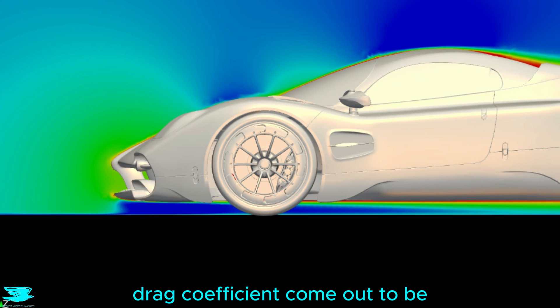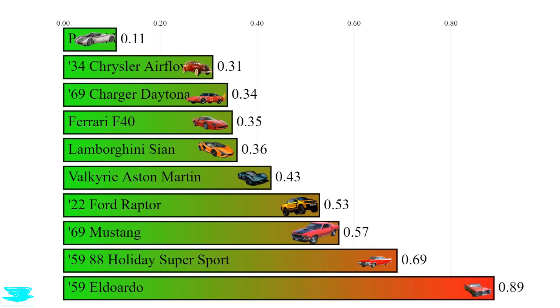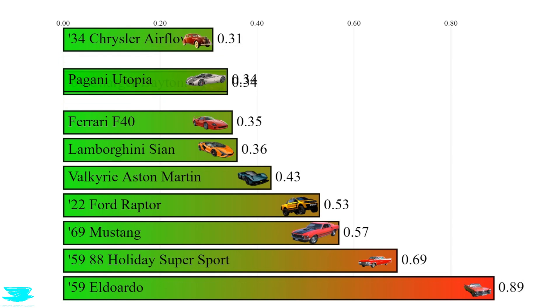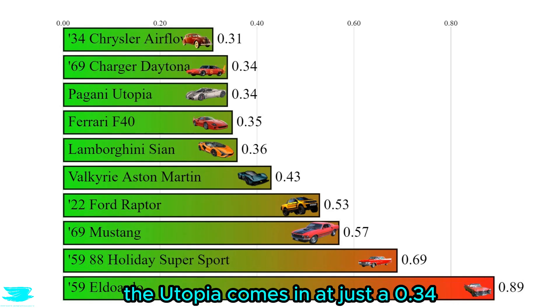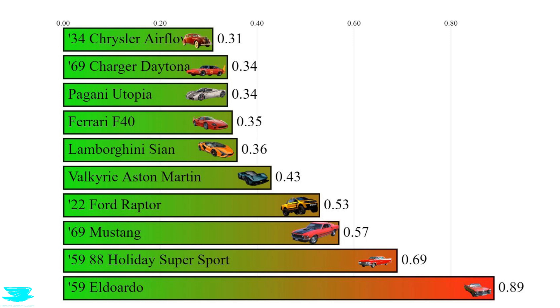So what does the Pagani's drag coefficient come out to be, and how does it stack up against other supercars? The Utopia comes in at just a 0.34, which is as good as one of the most successful race cars ever, the Daytona. So if you want to win some races, time travel back with the Pagani and race in late 60s. Peace, enemigos.